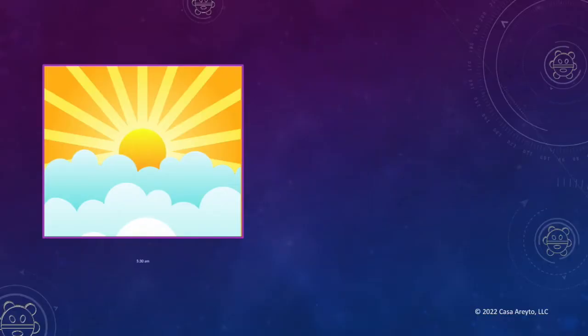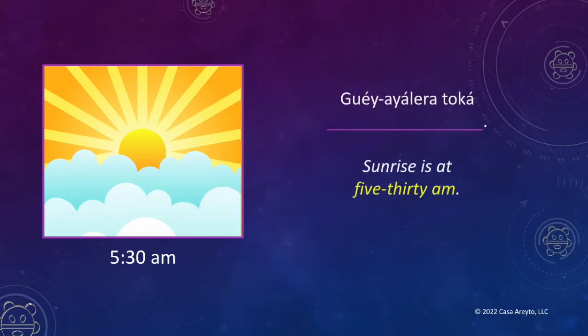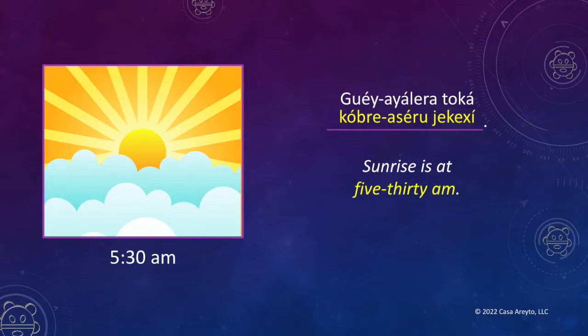I see that sunrise is at 5:30 a.m. Let's take a look at the sentence — guayaleta. I see that the time is missing. Do you remember how to say 5:30 a.m.? That's correct. So let's read the whole answer together. Sunrise is at 5:30 a.m. Not too bad, right? Let's do the next one.